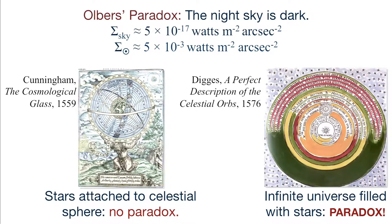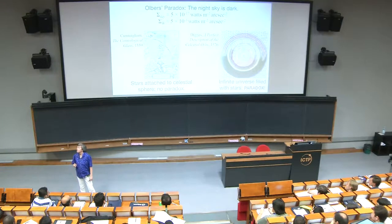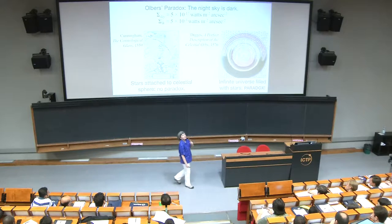Diggs wrote it down in wonderful Elizabethan language: 'This orb of stars, fixed infinitely up, extendeth itself in altitude spherically, and therefore immovable the palace of felicity, garnished with perfect shining, glorious lights innumerable.' So the stars are glorious lights, but the important part is they are innumerable — literally infinite in number. And when you have an infinite universe filled with an infinite number of stars, that's where the paradox comes in.